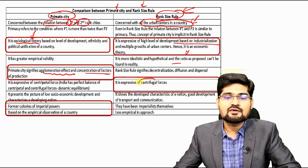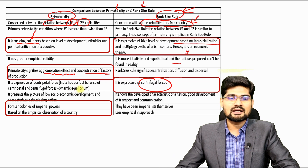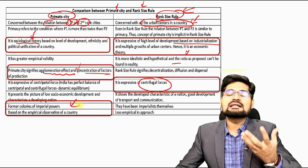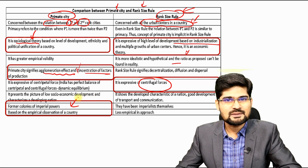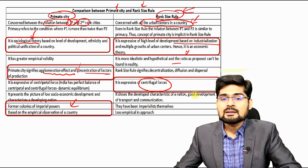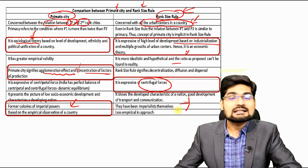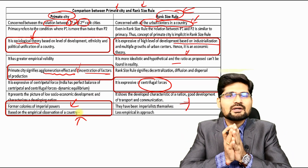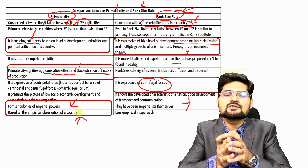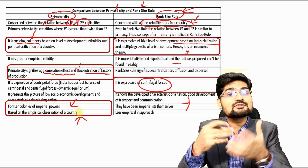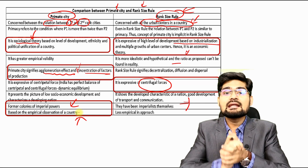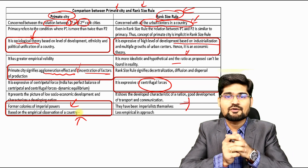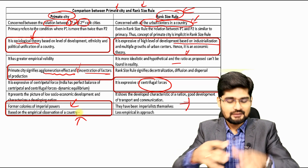Primate city signifies agglomeration effects and concentration of factors, while rank size rule also talks about de-agglomeration factors — how development is diffused across the country. It is expressive of centrifugal forces as well as centripetal forces. Primacy was based on agrarian economy and former colonial status, but new-age concepts can also be integrated into rank size rule. When the rule was published ten years later, it validated and extended the primate city concept.